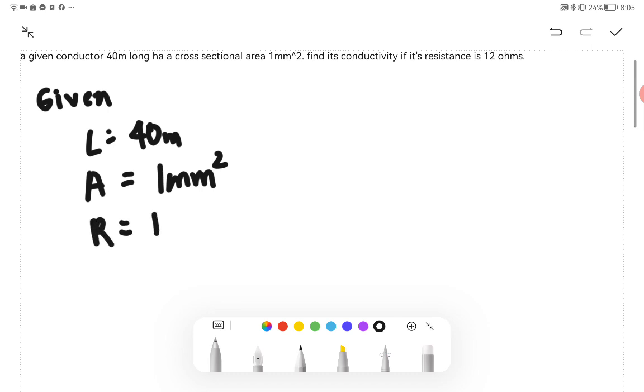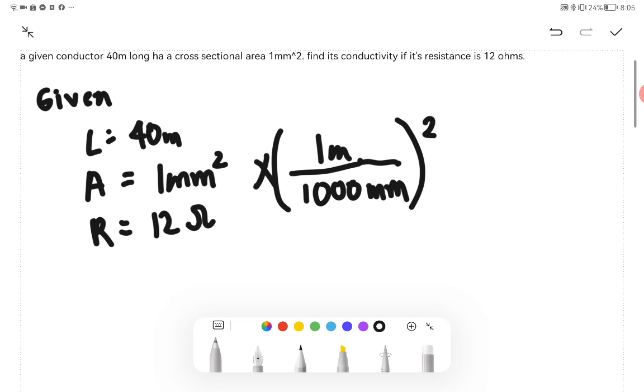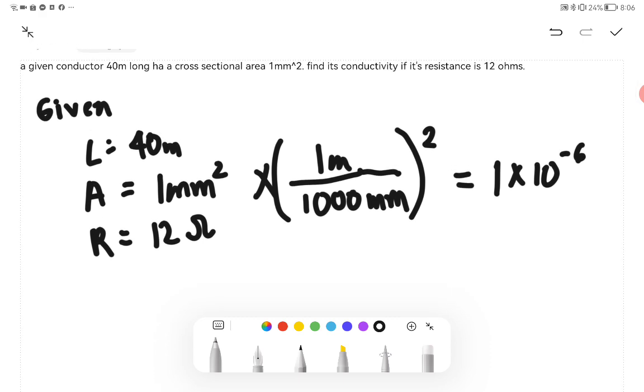We have to convert the area into meters. We have 1 mm² multiplied by, there are 1000 mm in one meter, since it is squared we have to square it so it will become 1 multiplied by 1 over 1000 squared, or 1 times 10 raised to negative 6. The area will be 1 times 10 raised to negative 6.